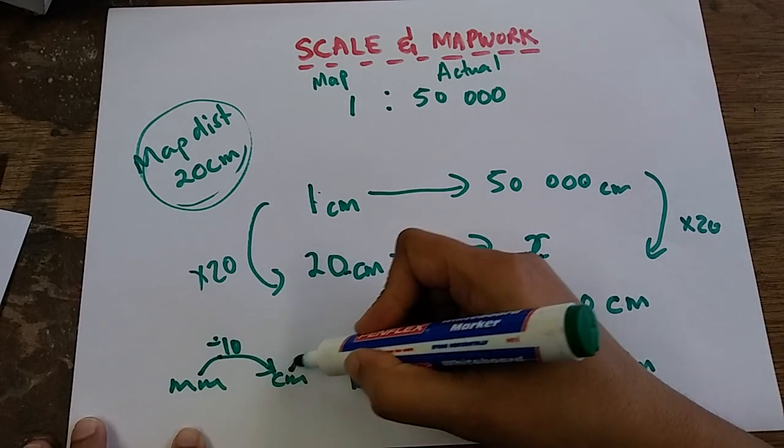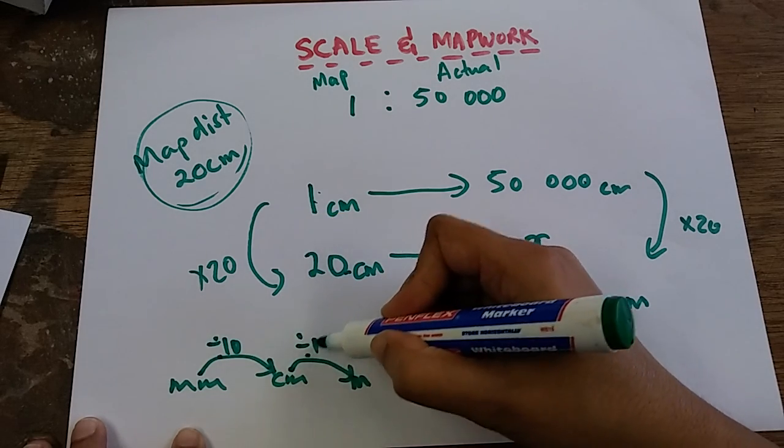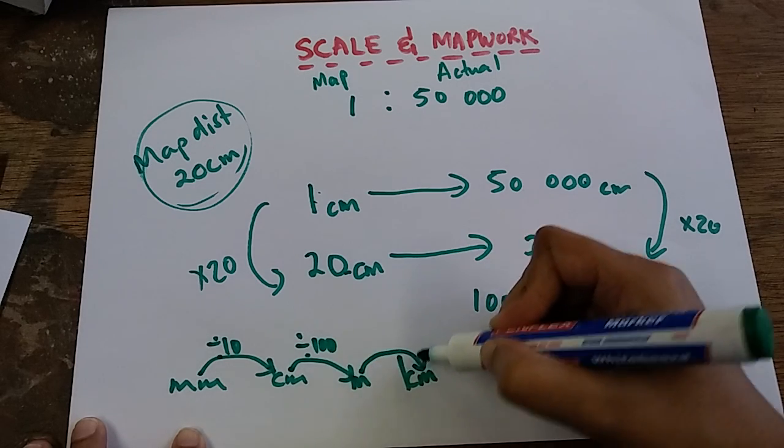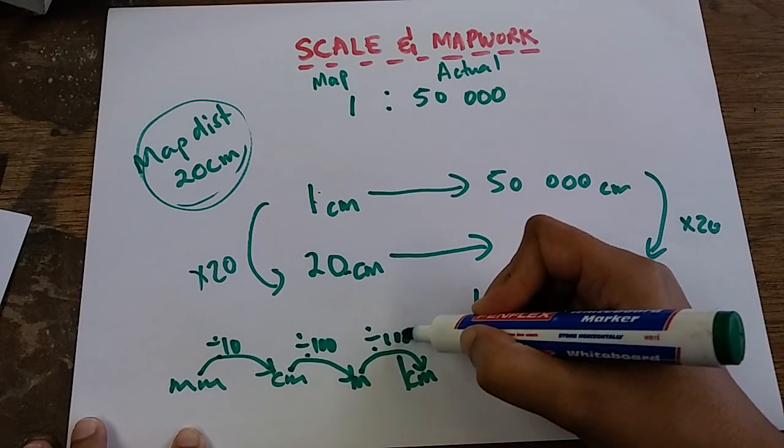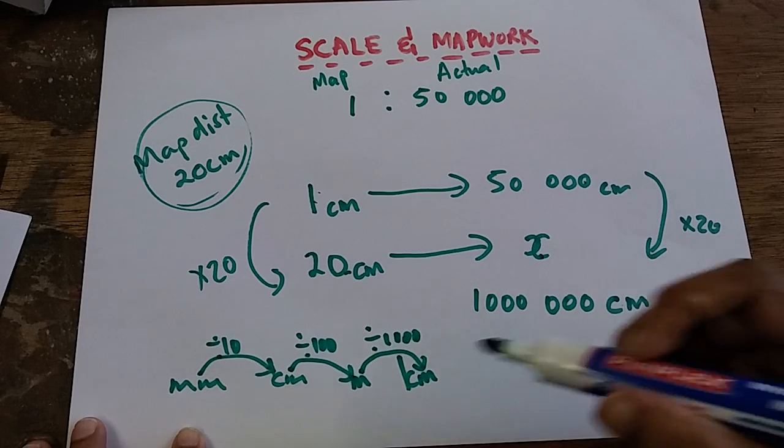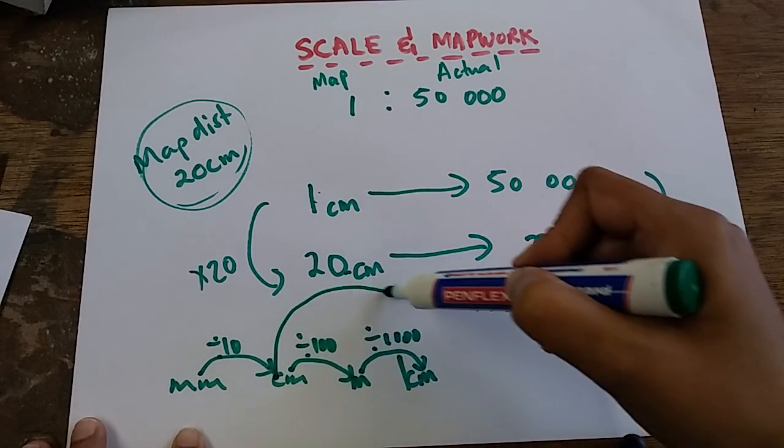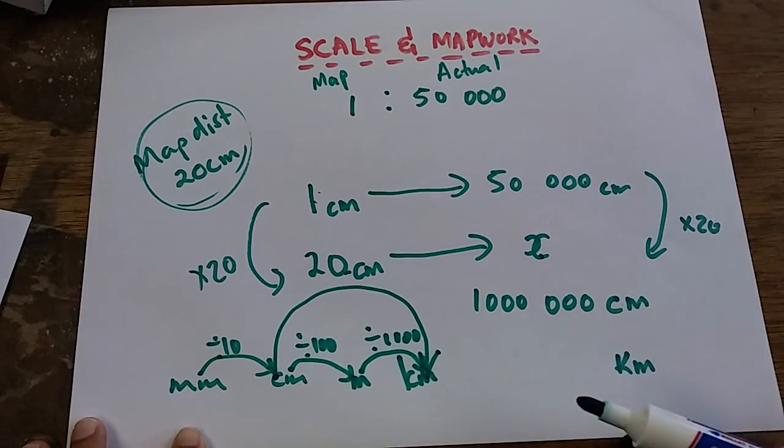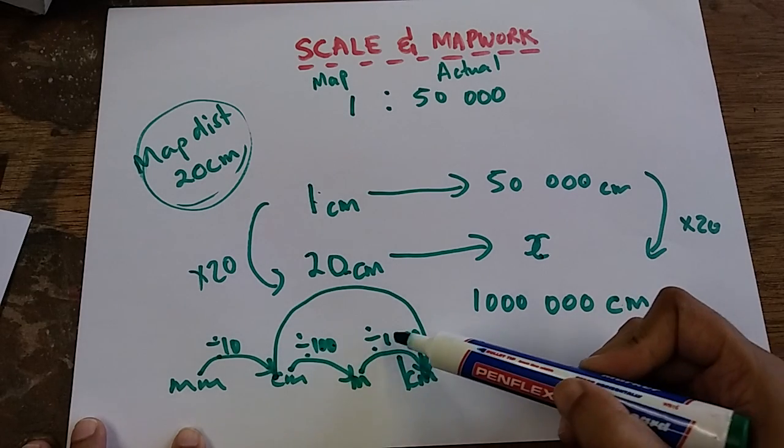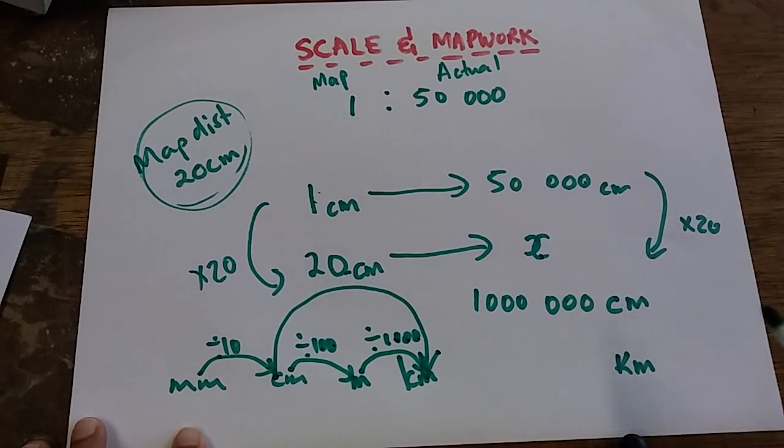I am converting from centimeter into kilometers. If I had to do it in one step, it means I'm dividing by one, two, three, four, five zeros, so I'm actually dividing by 100,000.